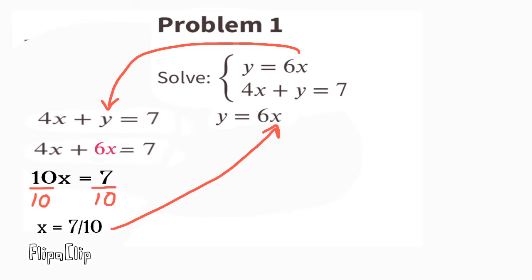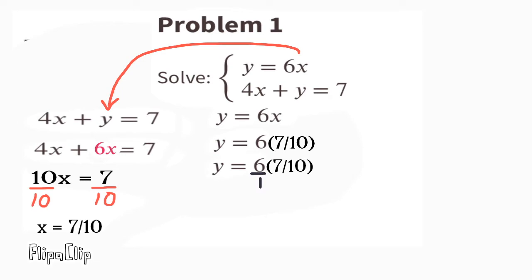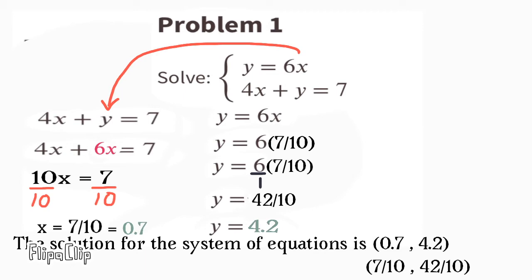Now we can solve for y by substituting the x with 7 tenths. y equals 6 times 7 tenths. 6 times 7 tenths equals 42 tenths. So y equals 42 tenths, or y equals 4.2. Therefore, the solution for the system of equations is (7 tenths, 4 and 2 tenths).